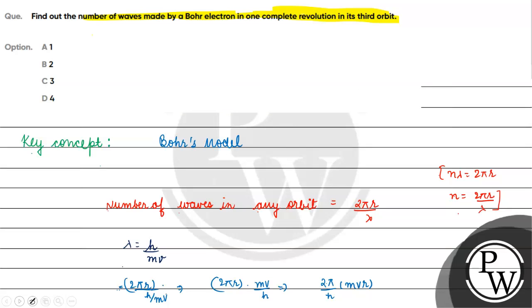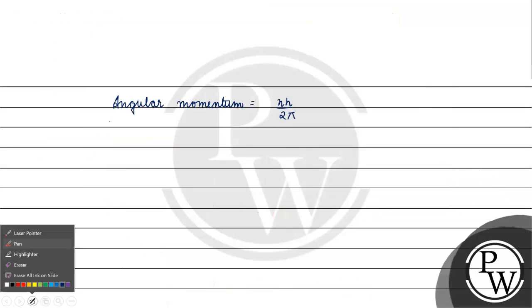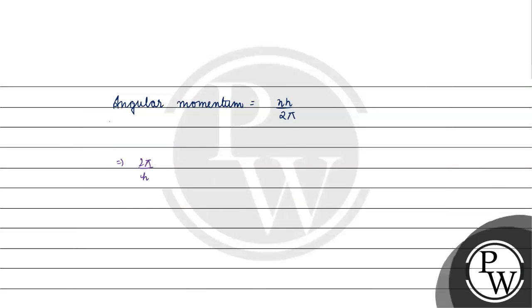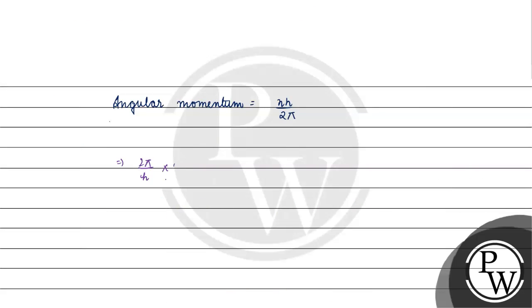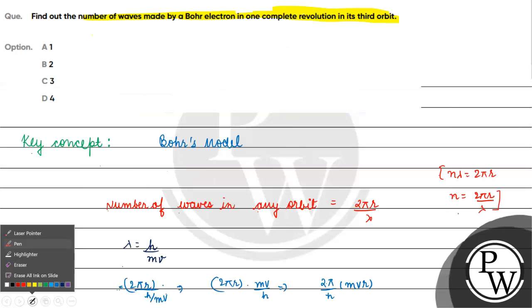mvr is angular momentum, which equals nh by 2π. So 2π by h into nh by 2π simplifies, and the number of waves will be equal to n.